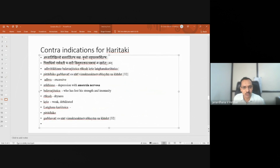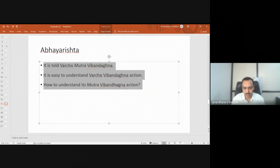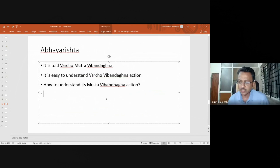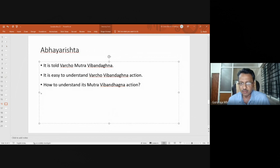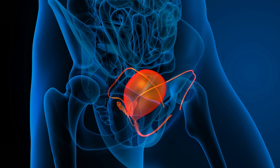Abhyarista is also told as Varcho-Mutra-Vibandhaghna — its benefits are not only limited to the intestine but it also clears difficulty in urination. The reason is that it is specifically acting on the functions and area of Apanavata. Apanavata governs both the intestinal and urinary excretion areas. So Abhyarista, by clearing Apanavata, is definitely supporting clearing of Vibandha as well as Mutraghata — obstruction to the flow of urine.